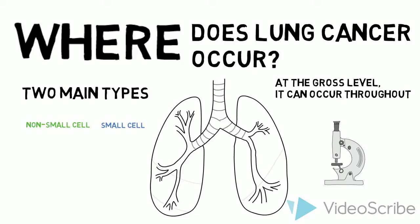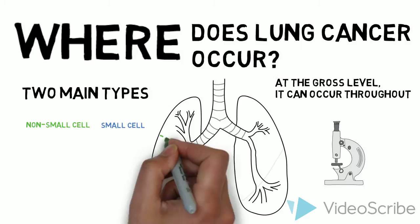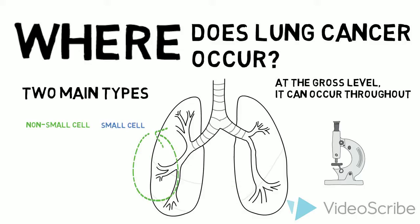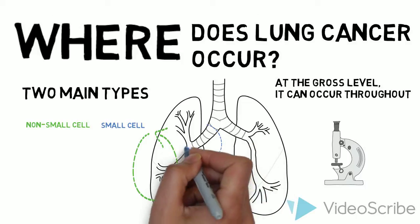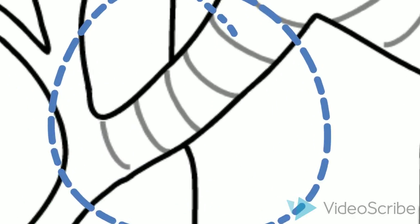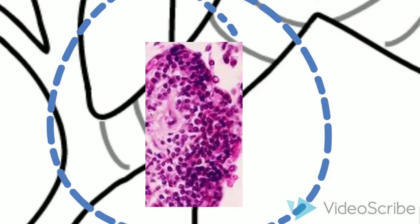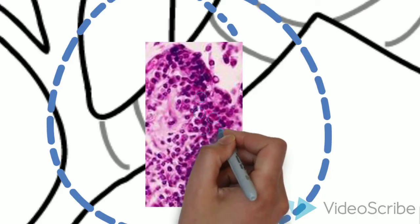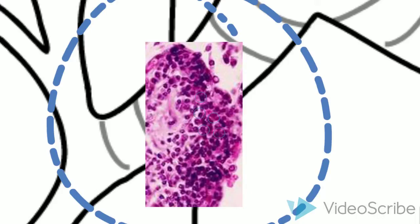Non-small cell lung cancers, specifically adenocarcinomas, appear more often peripherally in the lungs. Histologically, an adenocarcinoma can appear like glandular tissue and produce mucin. Other examples of non-small cell carcinomas include squamous cell carcinomas. Small cell carcinomas appear more centrally in the lungs. They are very distinct in histology and appear as small, blue, round cells — hence their name, small cell carcinoma.